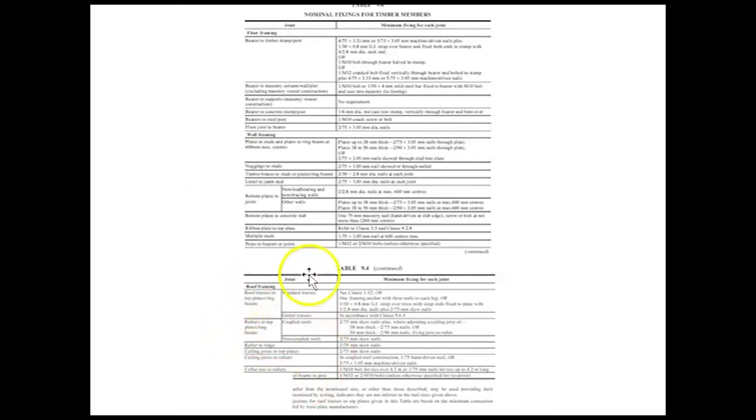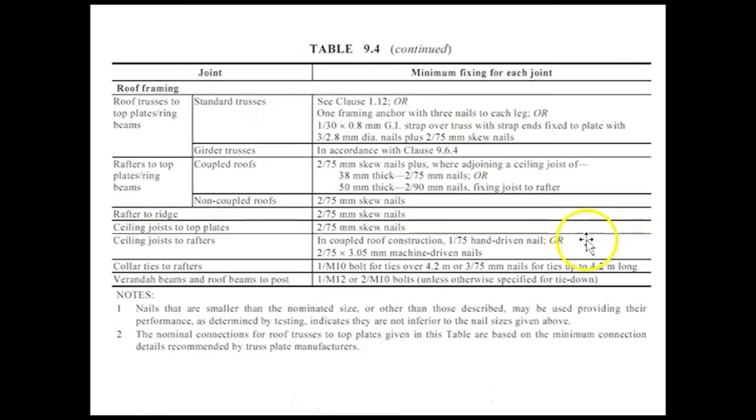We've got the floor framing components here, the wall framing ones there, but we're interested in the roof framing. So let's zoom in on this part of the table down here. There's our roof framing. Here we go. Standard trusses. That's what we're interested in. So when we go into the minimum fixing, we've got a choice. We can either choose one framing anchor with three nails each side, or we can throw in a strap with a couple of nails in there. And that's it. That's a nominal fixing chosen.